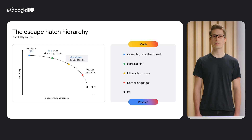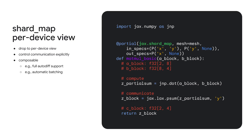Let's talk about shard map and the Pallas kernel language. They sit at two different levels of abstraction, letting you customize high-performance accelerated numerical computing. Earlier, we focused on a global view of your program — shard map gives you a per-device view. You can start thinking about what is happening on each device and control communication across devices explicitly. The example code shown here executes a collective matrix multiply, first computing and then communicating the result across chips. This is what tensor parallelism in a linear layer of a transformer might look like. Shard map still supports composable function transformations like auto-differentiation.